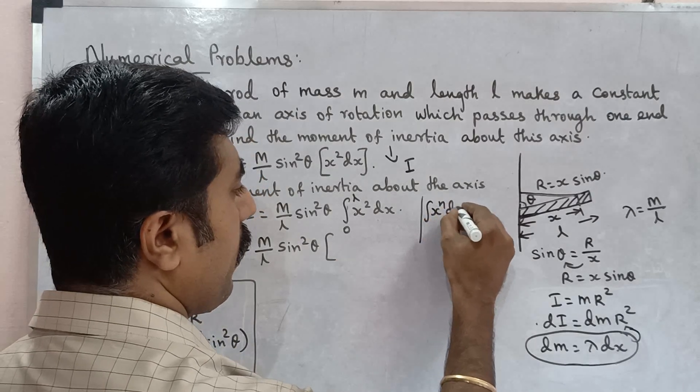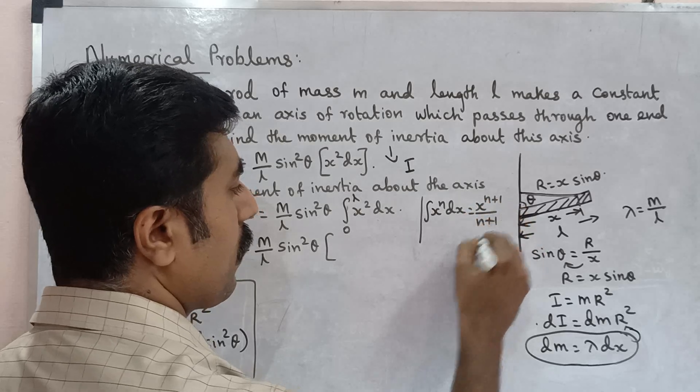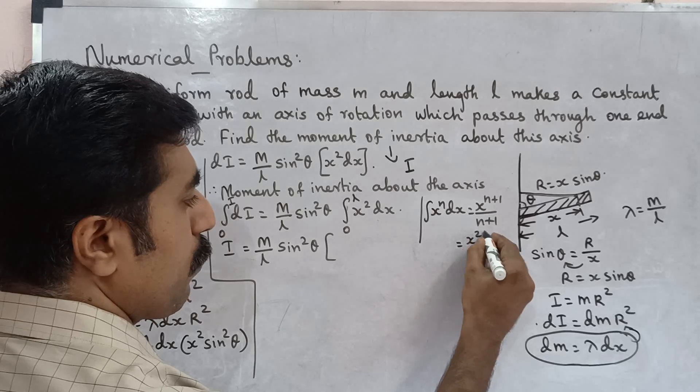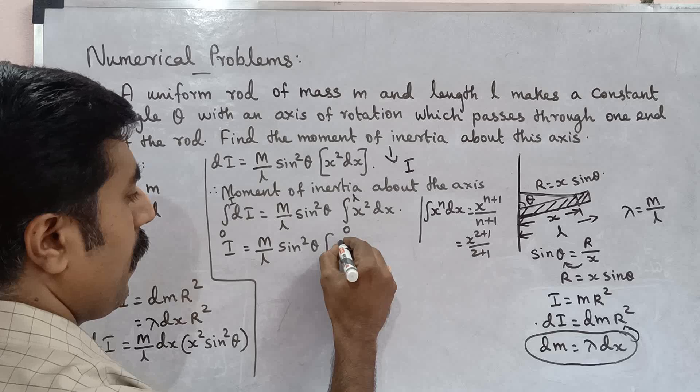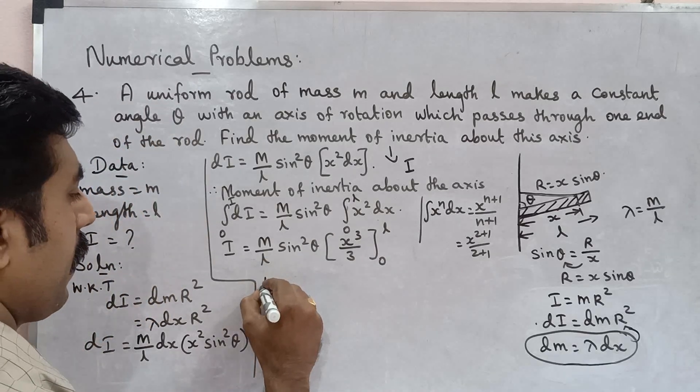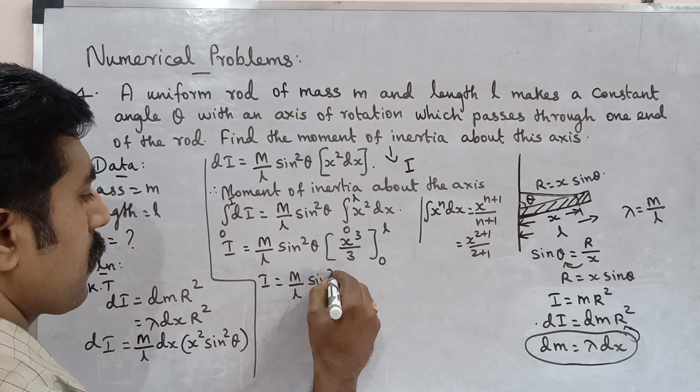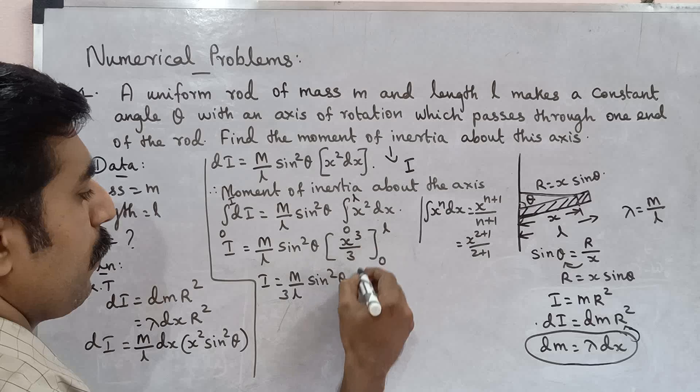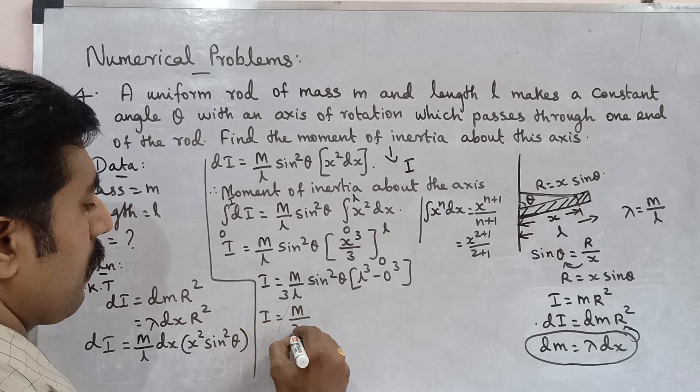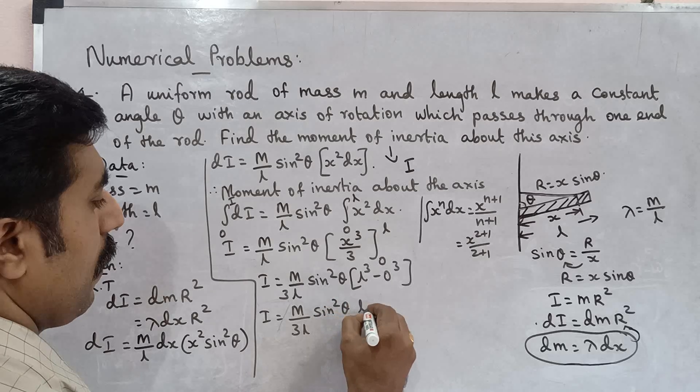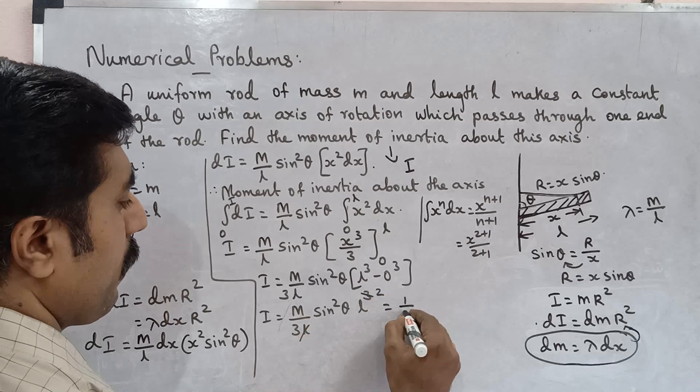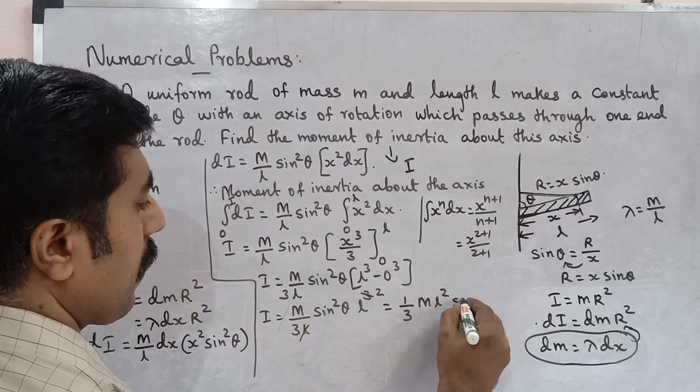Integral x square dx, integral x power n dx equal to x power n plus 1 by n plus 1. x power 2 plus 1 by 2 plus 1, x cube by 3 limit 0 to L. I is equal to m by L sin square theta, three constant, x cube, limit upper limit L cube minus 0 cube. I is equal to m by 3L sin square theta into L cube, which is equal to 1 by 3 m L square sin square theta.